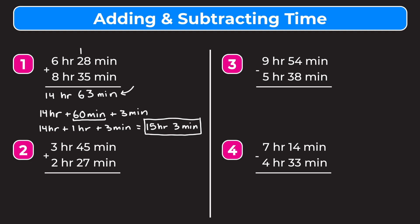For example two, I encourage you to pause the video and try it on your own before watching me work through it. We start by adding the minutes: 5 plus 7 gives us 12, so we put a 2 down and carry the 1. Then 1 plus 4 plus 2 gives us 7, so we get 72 minutes.